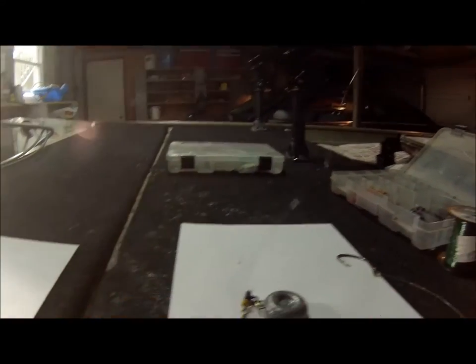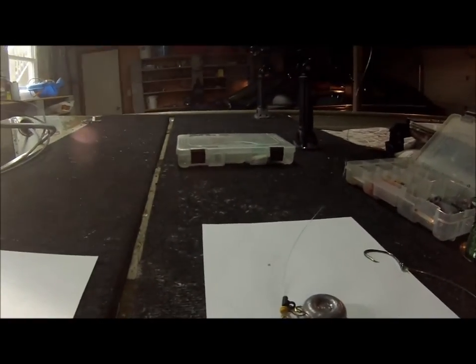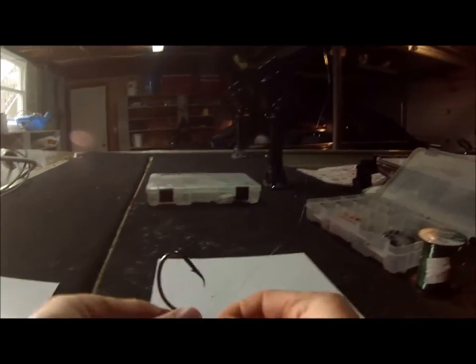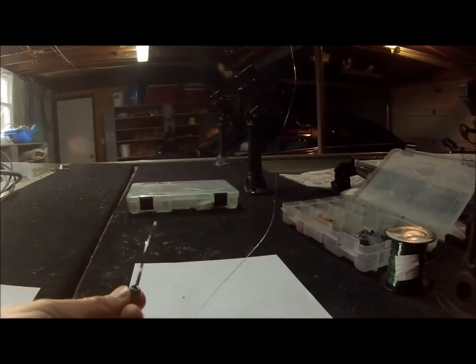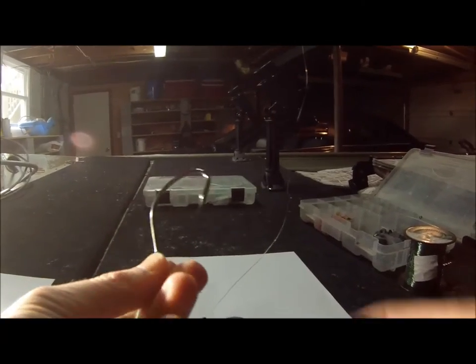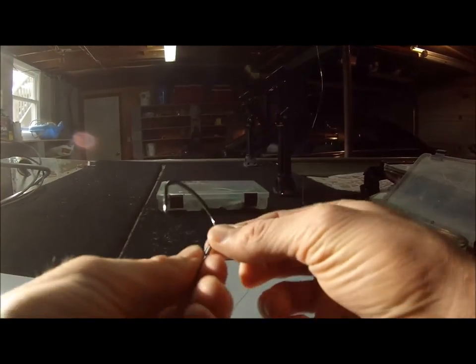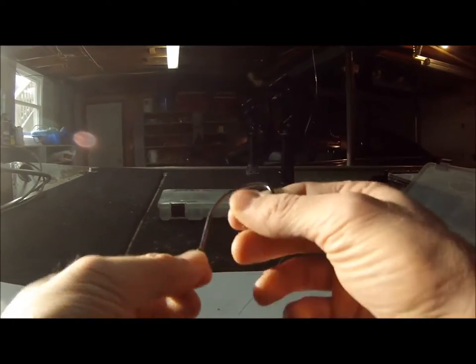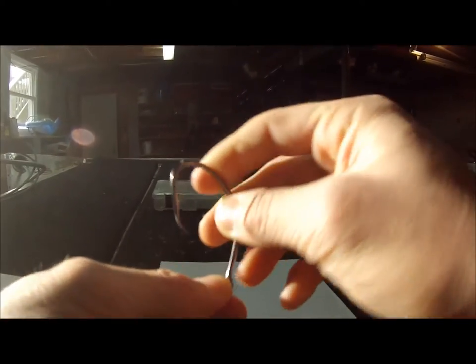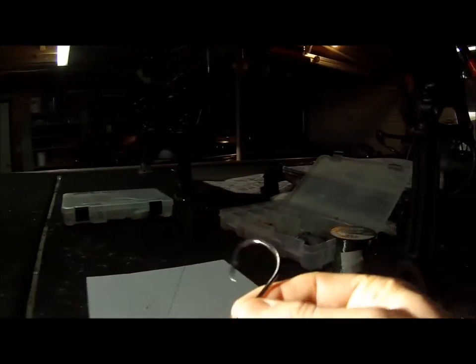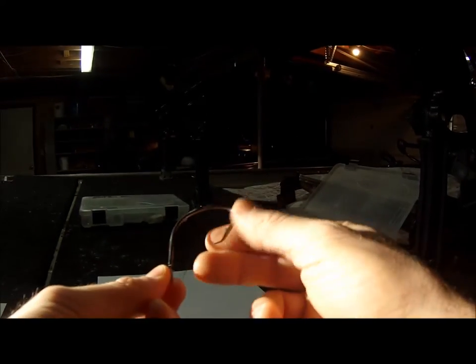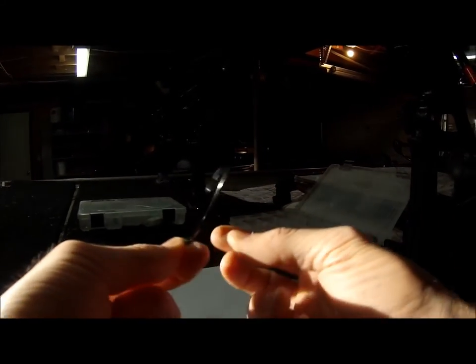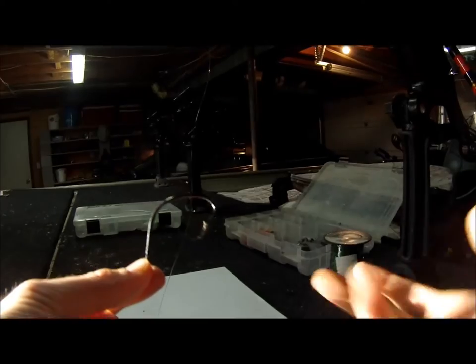So as far as hooks that I use, I typically use team catfish products. This is an 8-0 double action circle hook, and it's a very reliable hook for me. I've only had success with these hooks and you can go a little bit smaller. You can even go to a 5-0 if you'd like to, but the 8-0 seems to be my favorite and you can catch catfish over 100 pounds with this hook.